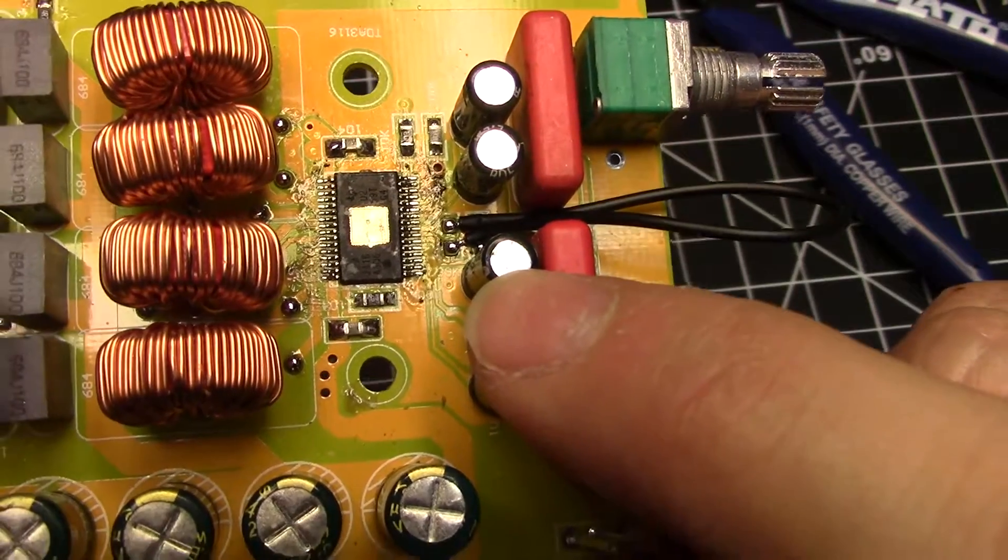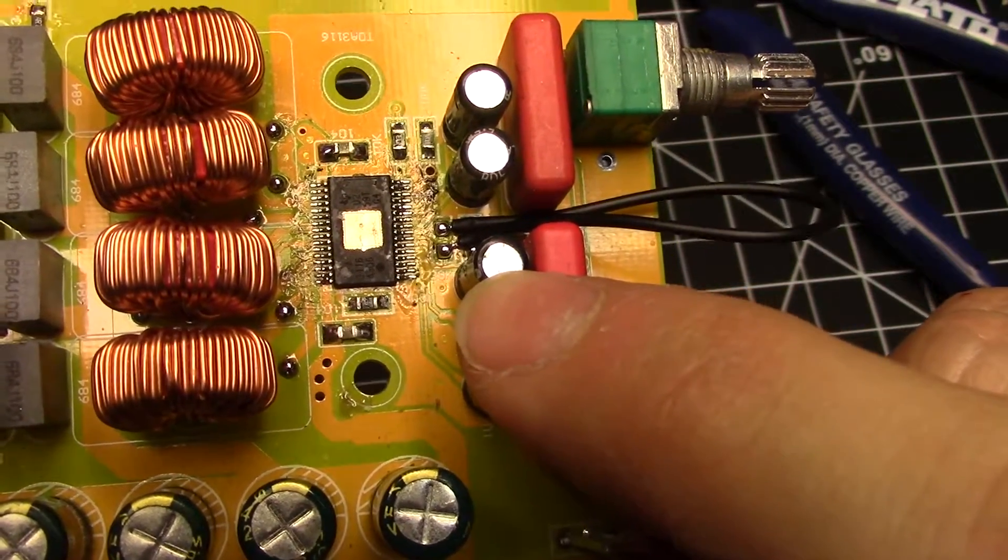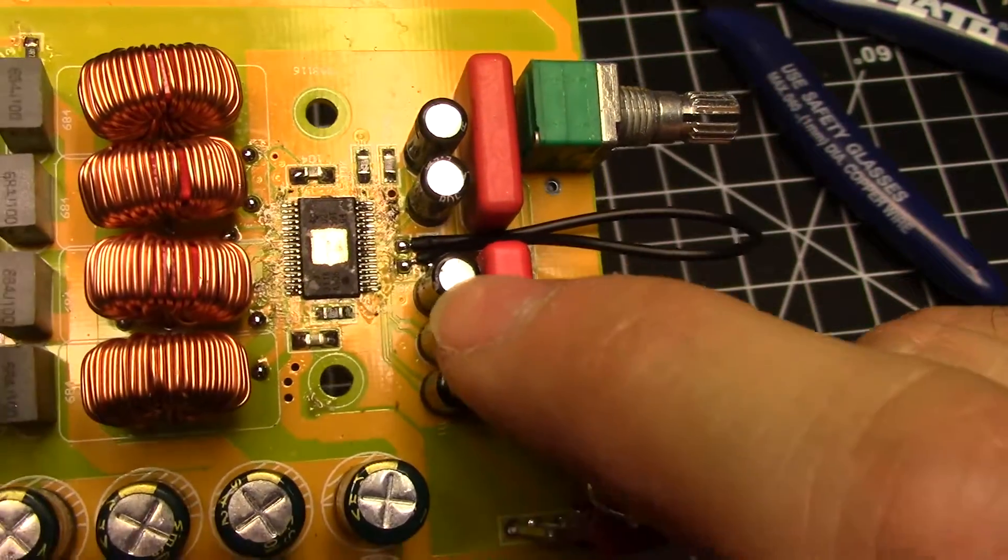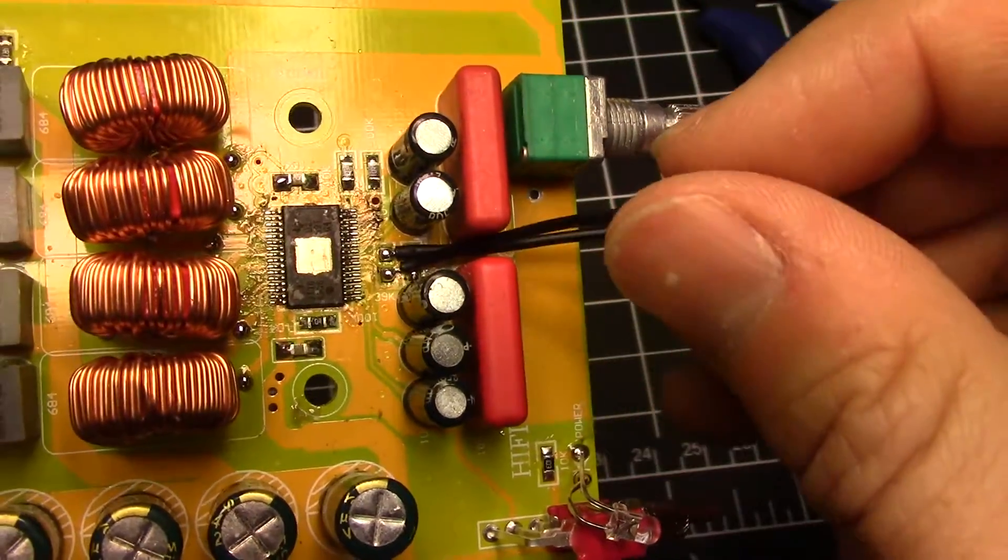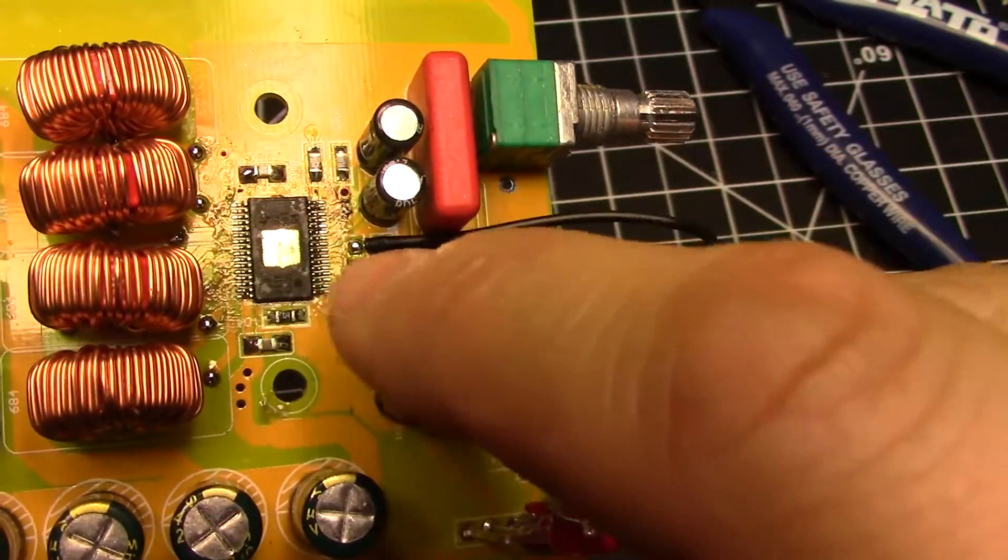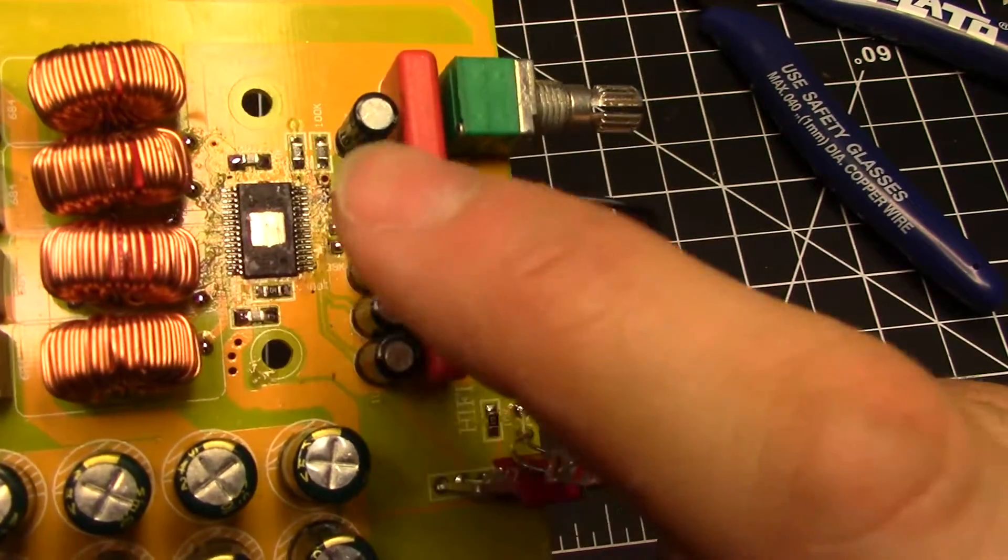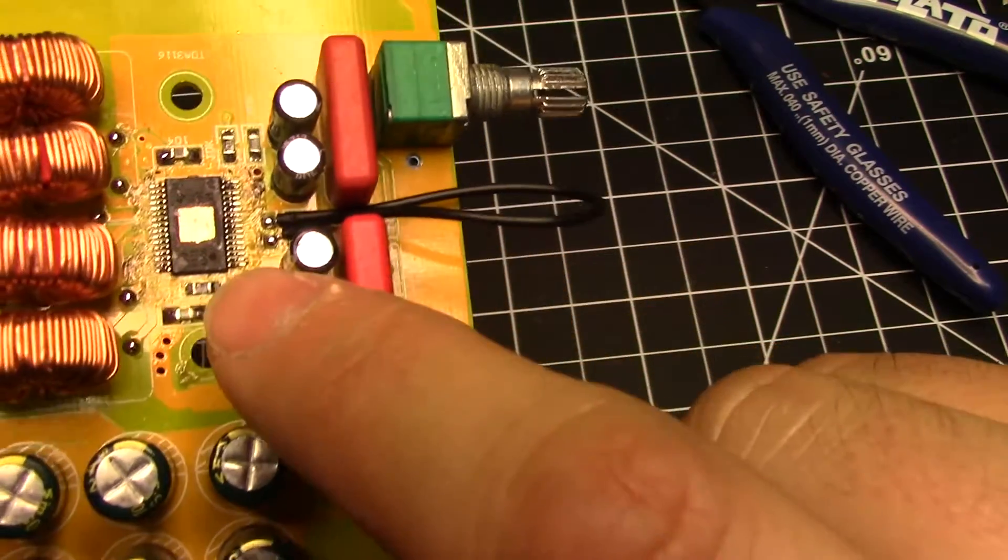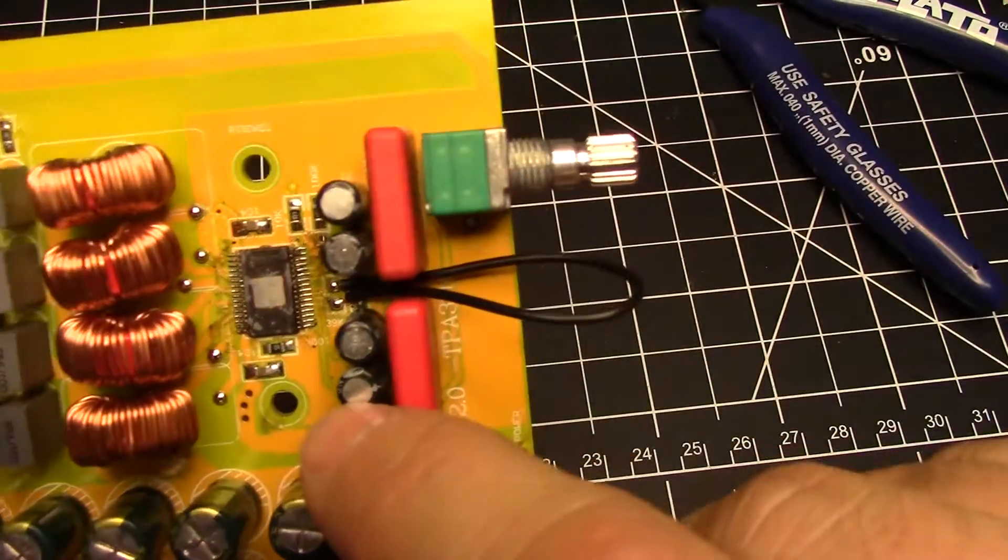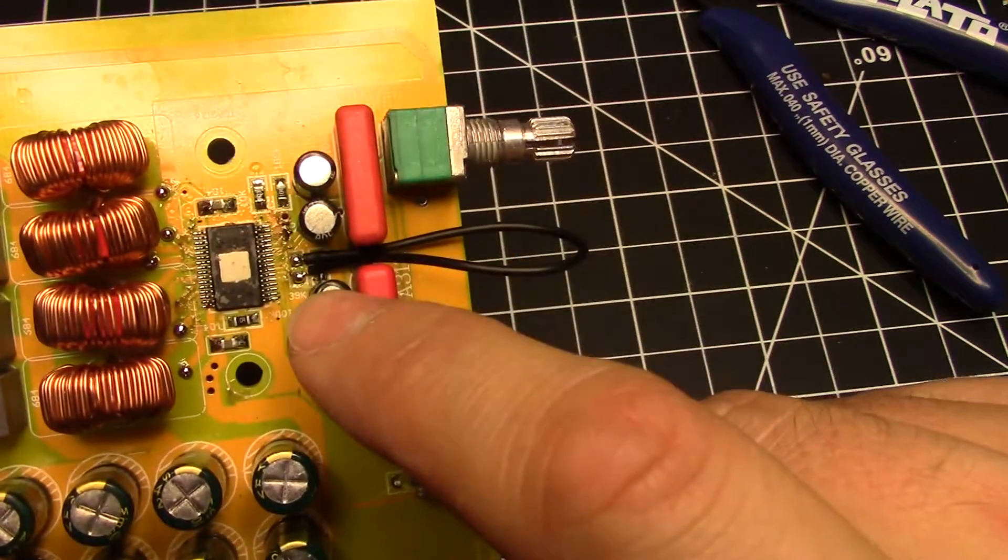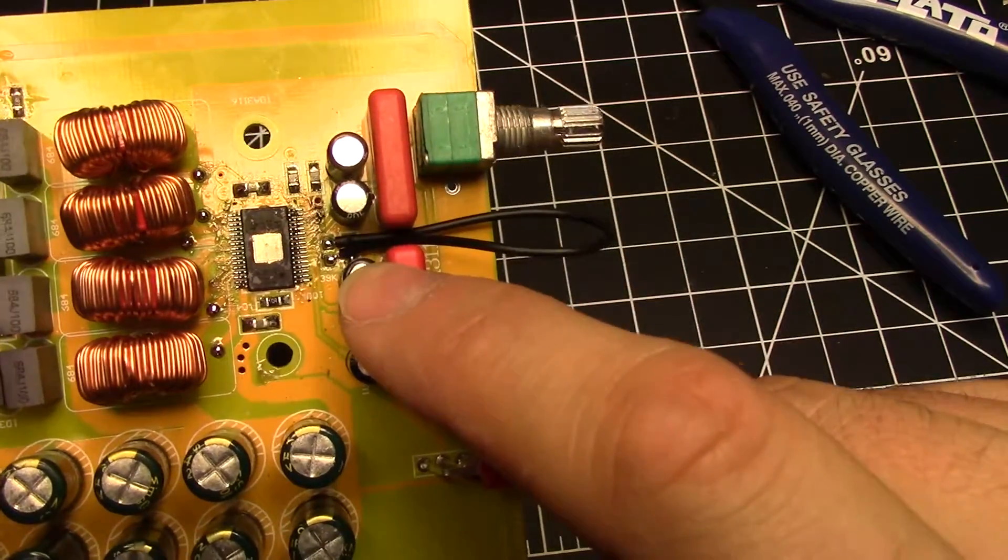To get rid of the 32 decibel gain, there are two resistors - a 39k ohm and a 100k. These are surface mount resistors. I soldered these wires on here. To reduce this to 20 decibels of gain, you switch the 39k to 5.6k and open the other one.